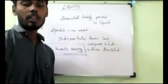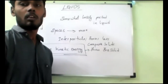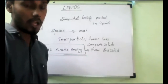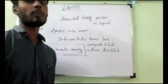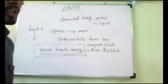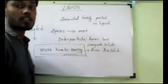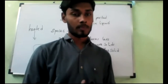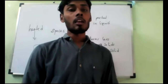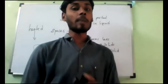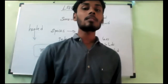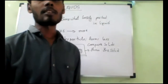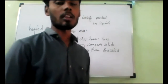As we know, liquid does not have a fixed shape because the positions of the particles are not fixed, due to less strong forces of attraction between them. That is why a liquid takes the shape of its container, because the particles of a liquid can slide over one another easily.